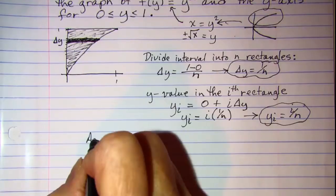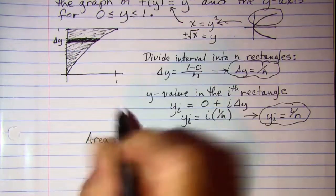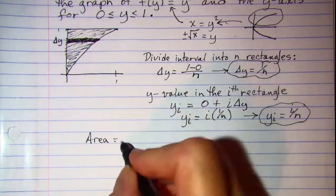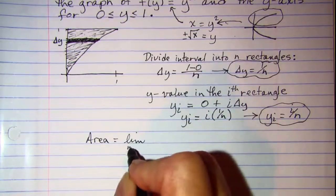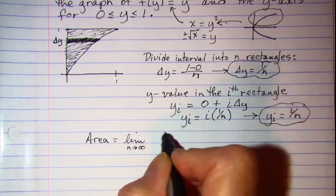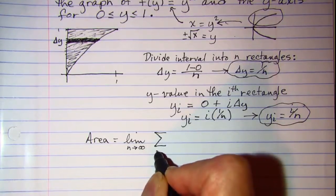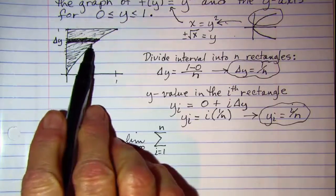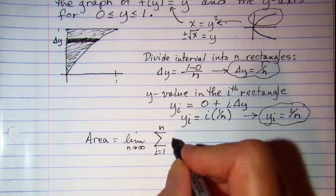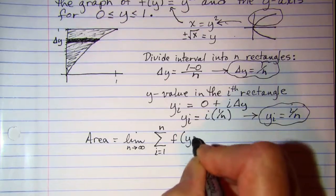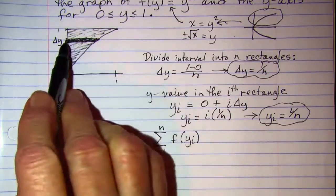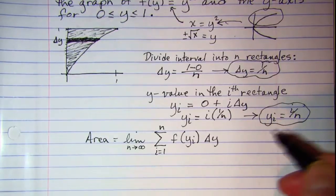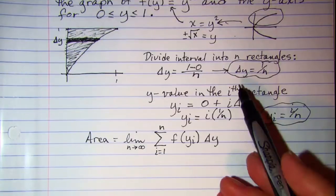So the area of our region between the y-axis and the graph of the function, the shaded area, will be the limit as n approaches infinity, the summation of all of the rectangles, i is going from 1 to n. The length of the rectangle is f of y sub i and the width of the rectangle is delta y. So let's fill in the information that's specific to our problem.